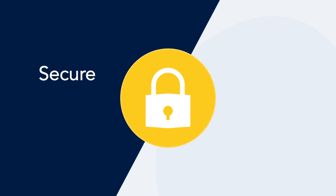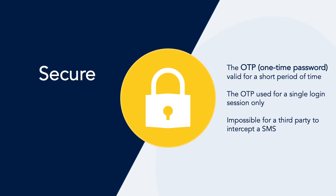Using verification codes sent by SMS to mobile phone numbers is a relatively secure verification alternative. The one-time password, or OTP, is usually valid for a very short period of time and used for a single login session only. As such, SMS authentication helps minimize users' reliance on repeatedly used passwords and ensures the security of users' information.